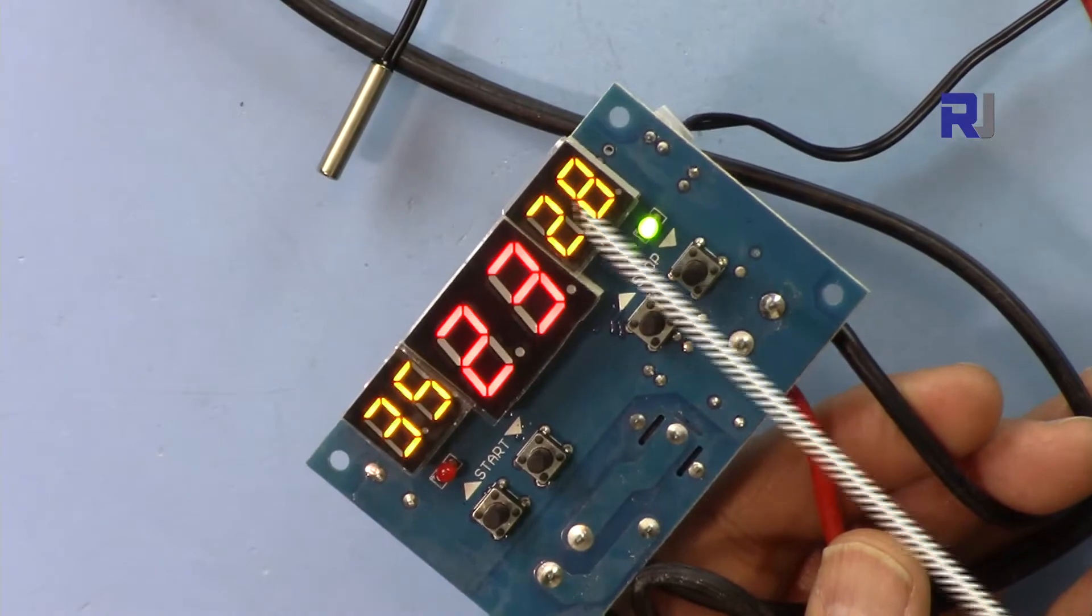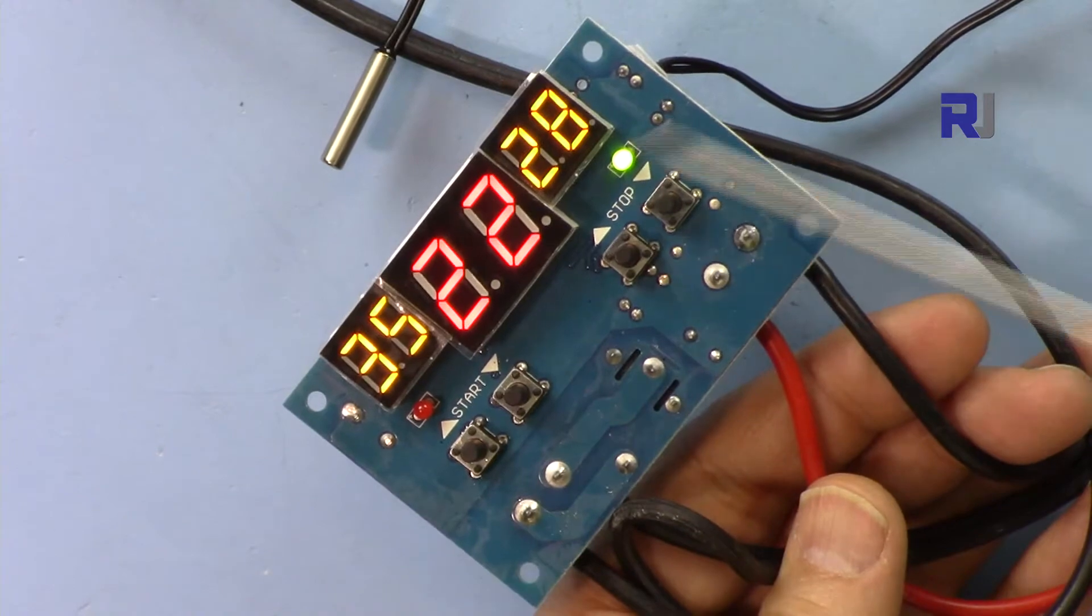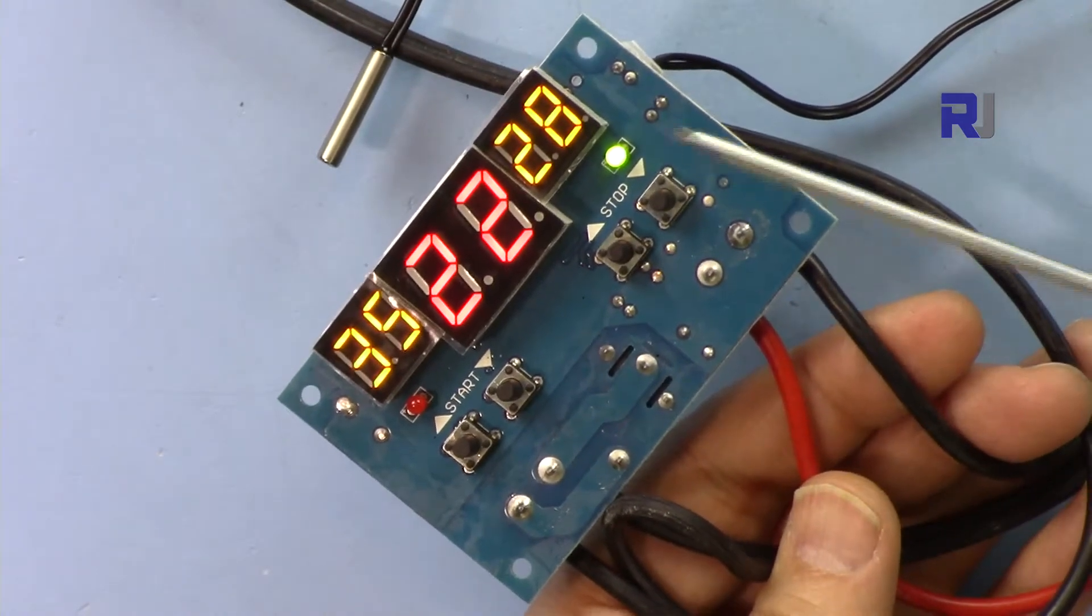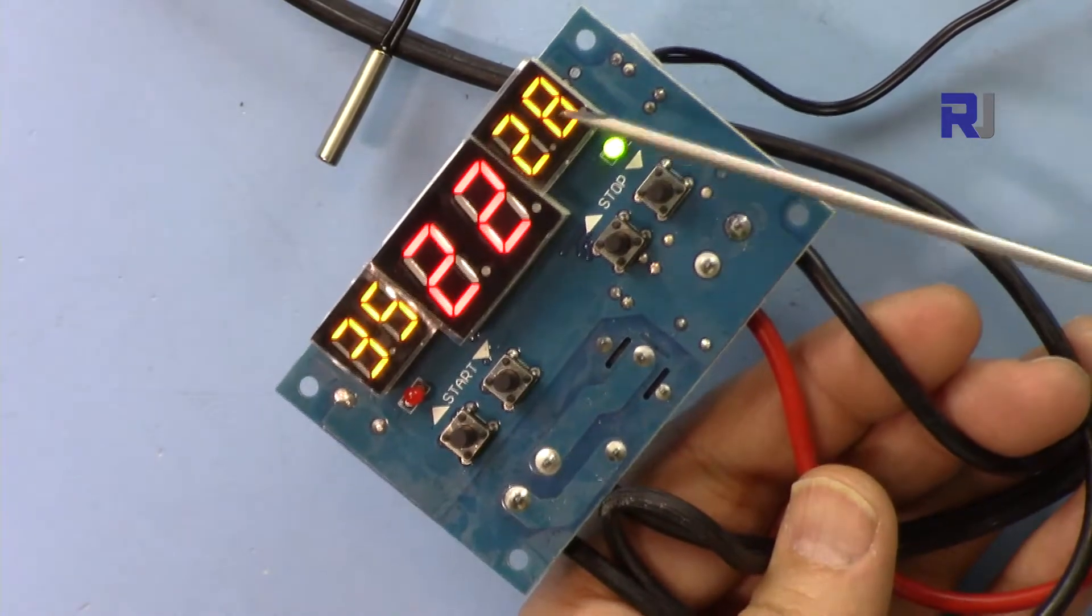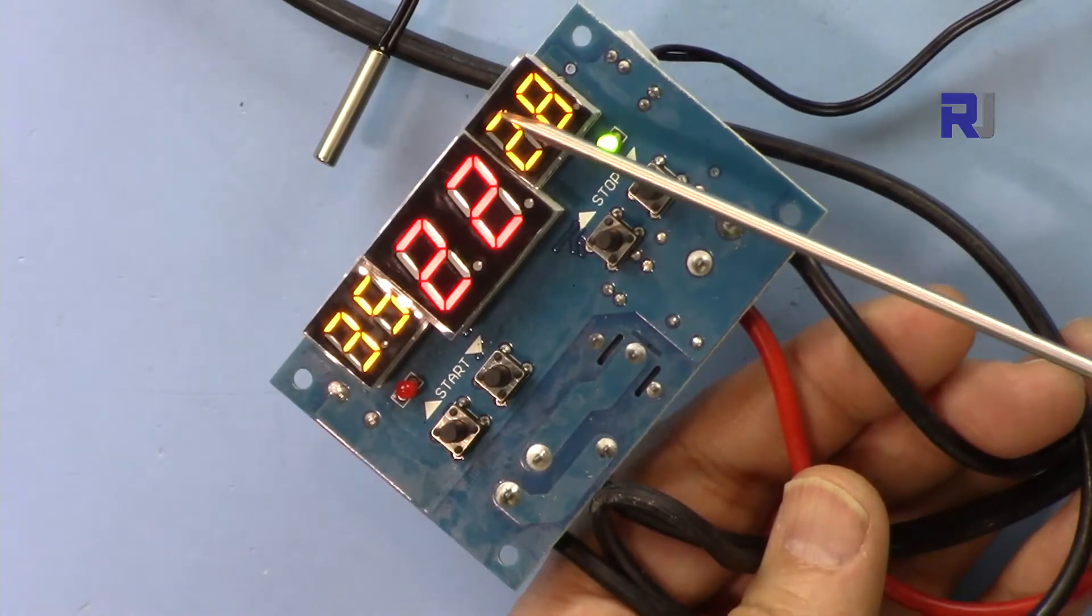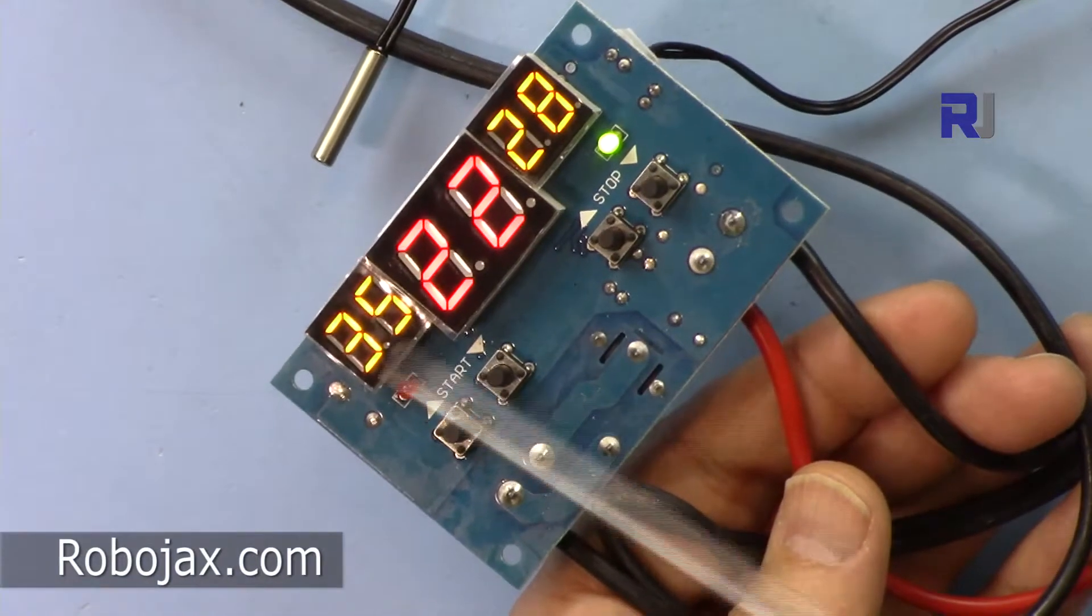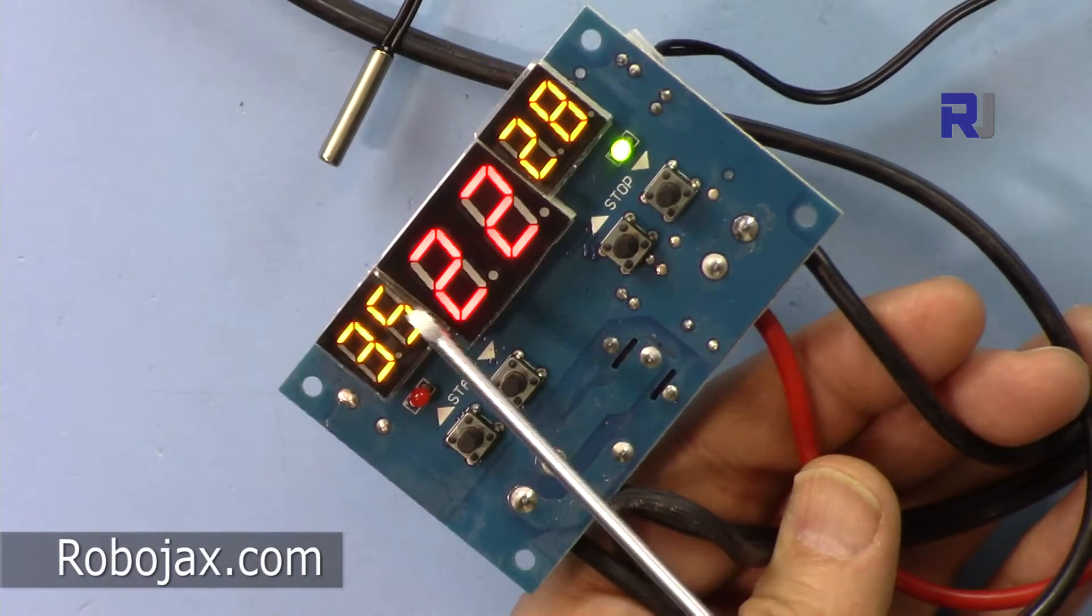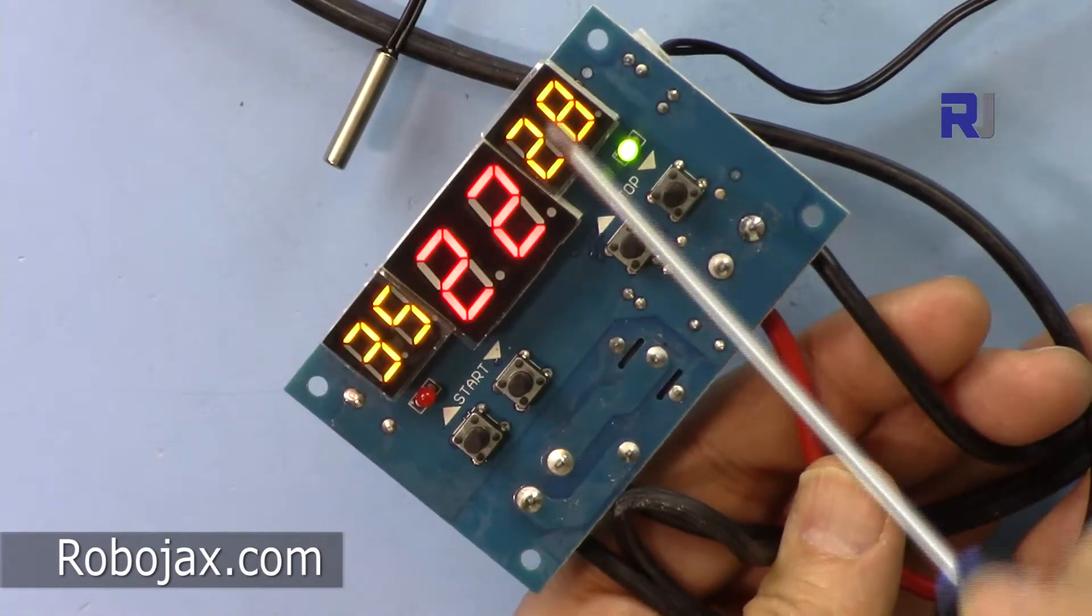This device can control a cooler like a refrigerator or can control a heater. It has two modes. The mode depends on how you set these temperatures. If you set the start temperature higher and stop temperature lower, this will act as a cooler. This will work as hot start and this is called cooling mode.